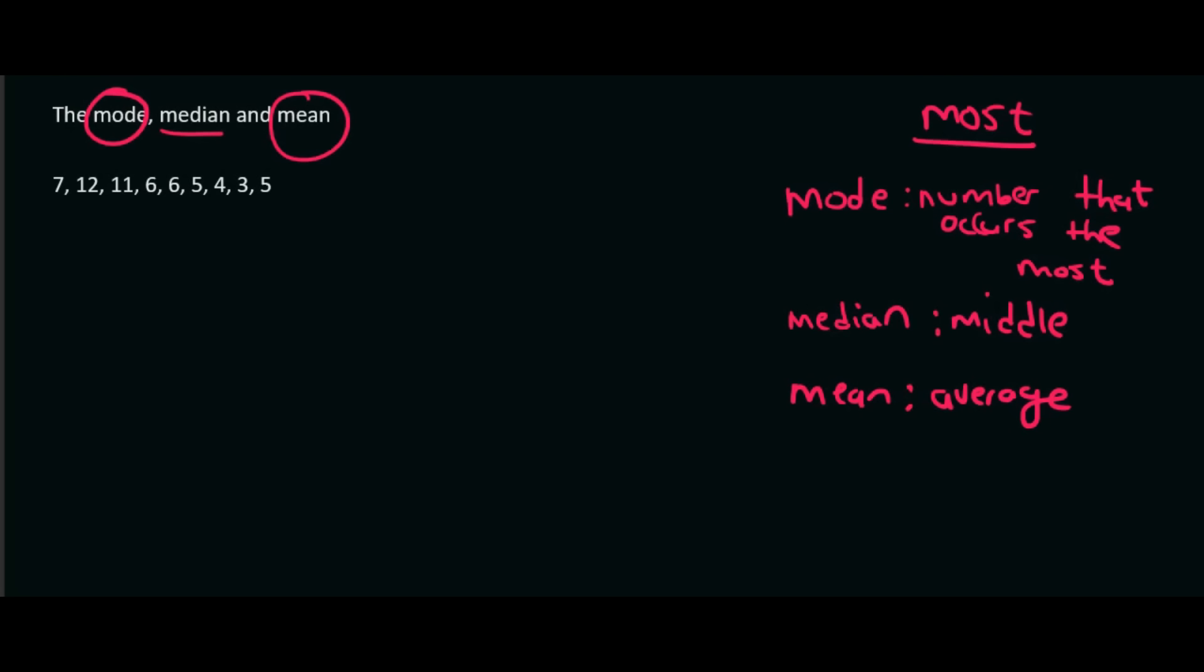The mode, it's the number that occurs the most. The median, think of small, medium, large. So median is the middle one. And then mean, well, that's when the teachers are being very mean because they're wasting your time. Because you've got to do that big calculation. And it's also just the average. Very, very important.